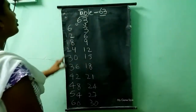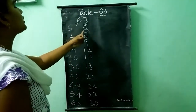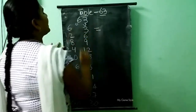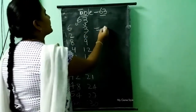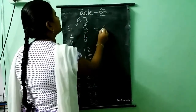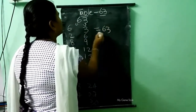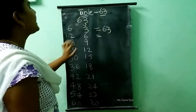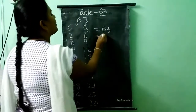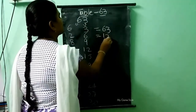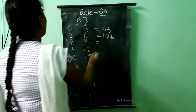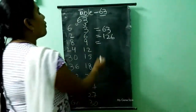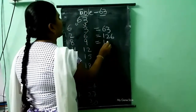Now we need to combine these both numbers. 6 and 3 gives 63; 12 and 6 gives 126; 18 and 9 gives 189.